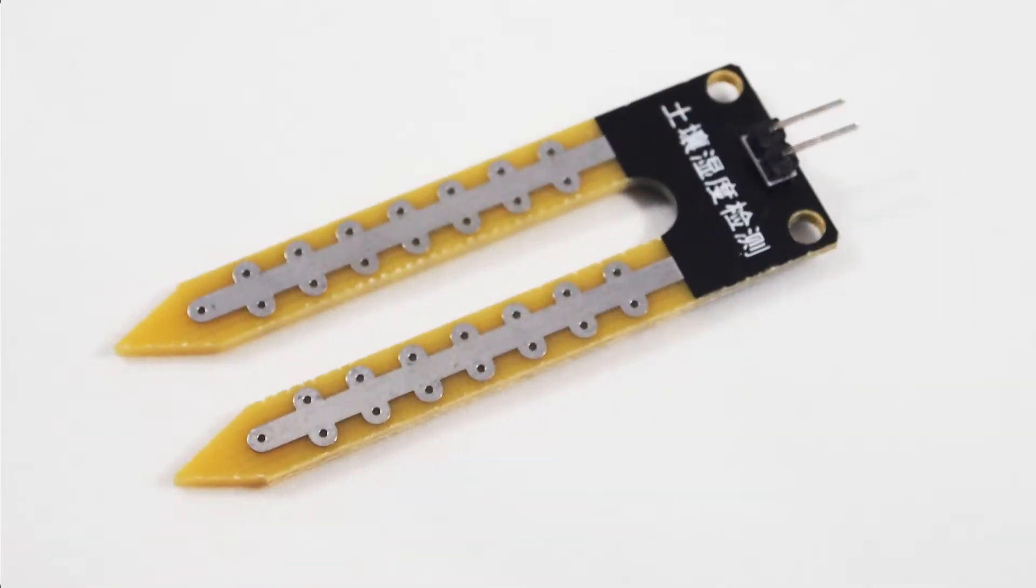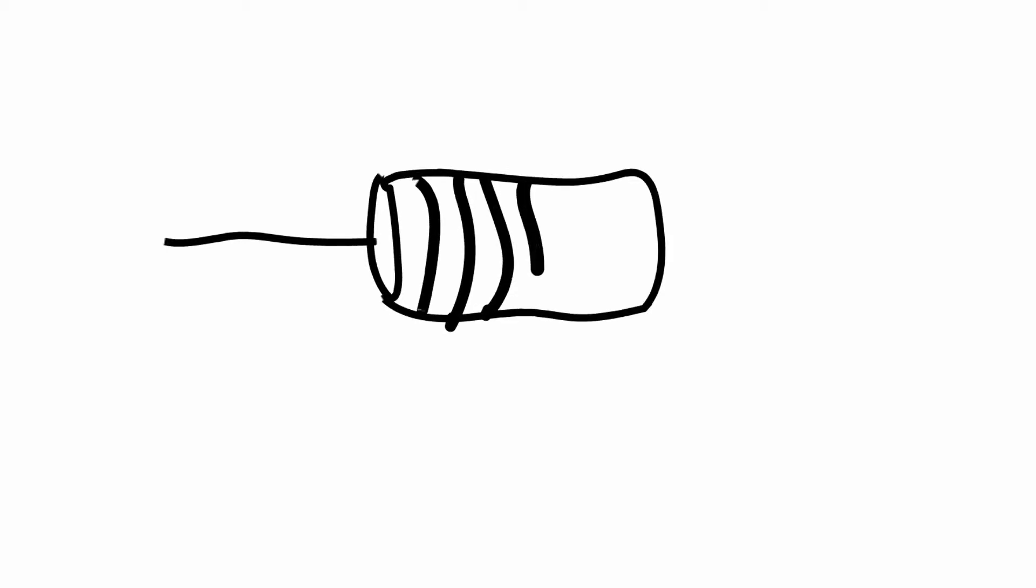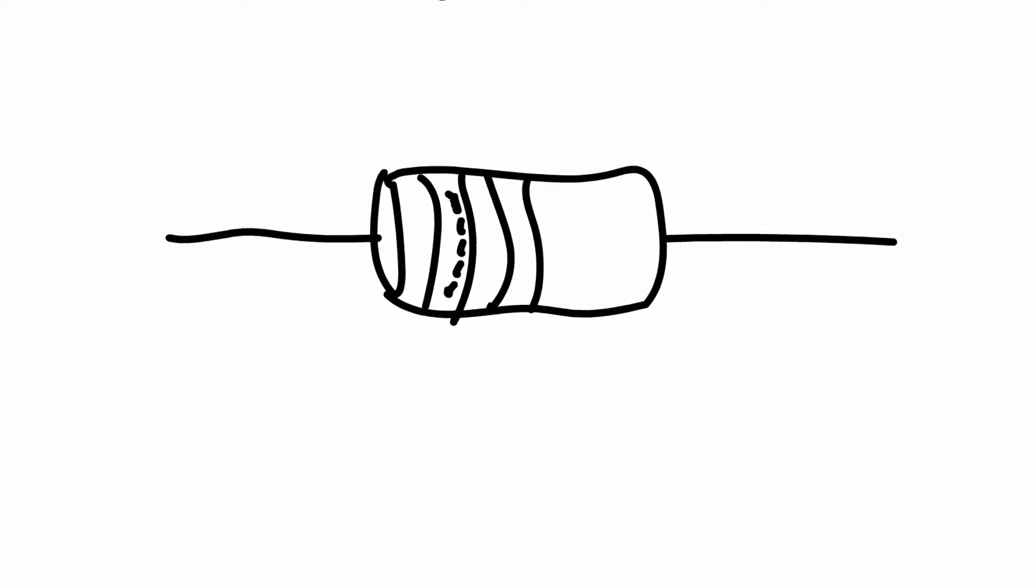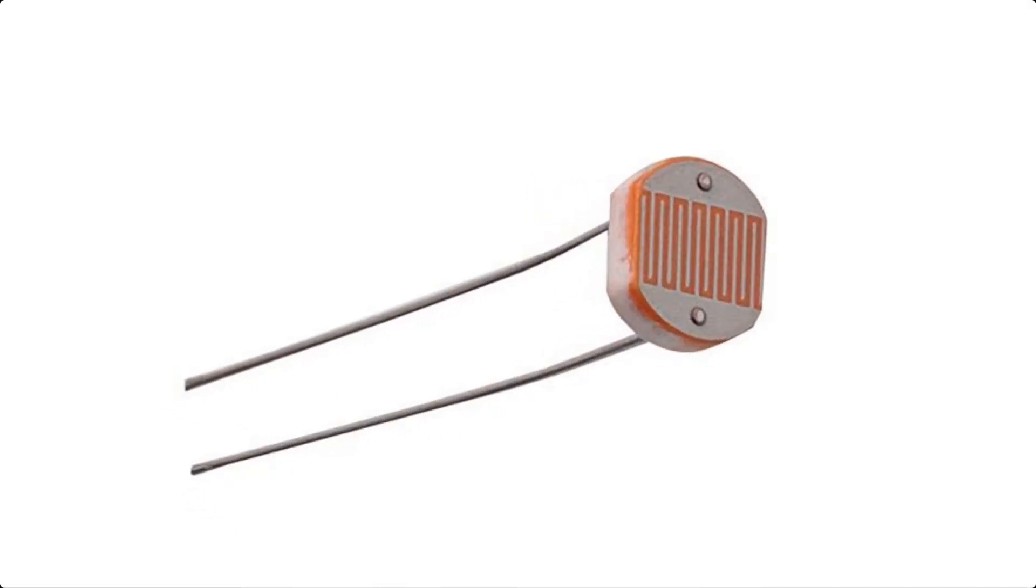Many soil moisture sensors are a type of variable resistor. Resistors are electronic components that can be used to slow the flow of electricity through a circuit. Resistors come in a variety of levels, depending on the components they are paired with. Variable resistors are resistors whose resistance level varies based on an environmental factor.